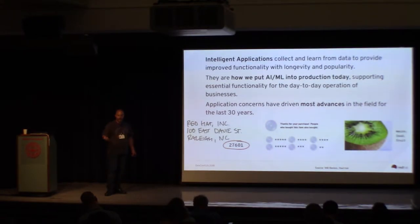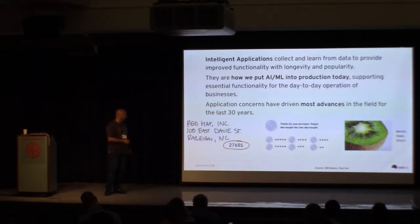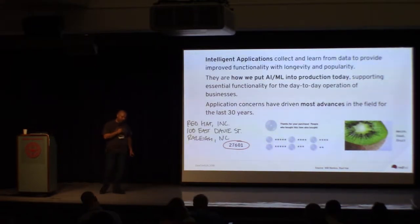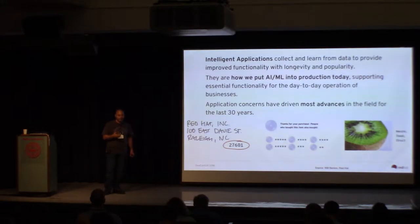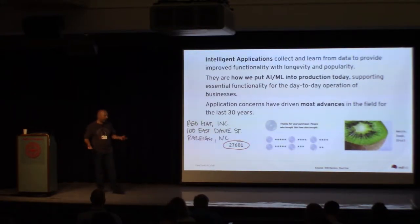From banking through anything with security automation, production automation — all of that. Most of the big advances recently in artificial intelligence are based on a business use case-driven application of AI and the combination of compute power with the availability of real-life data. There are a couple of examples where big advances have been made.